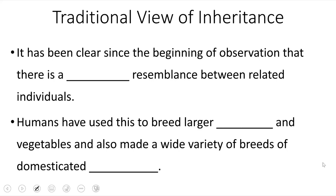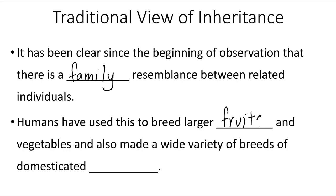It has been clear since the beginning of observation that there is a family resemblance between related individuals — both in humans, in plants, and in animals. There is a connectedness between parents and offspring, or between many individuals in a generation. Humans have used this to breed larger fruits and vegetables, as well as make a variety of breeds of domesticated animals.